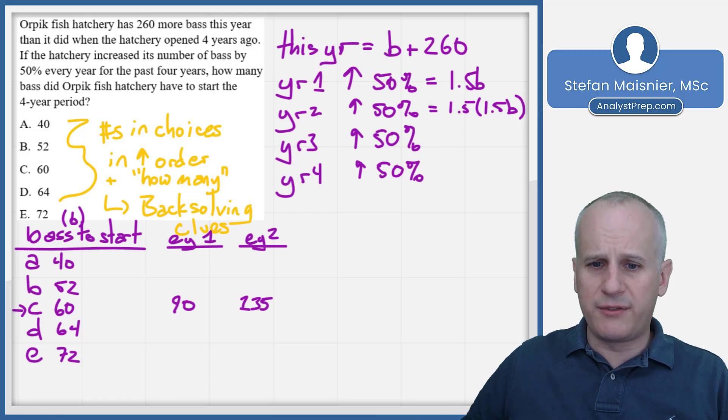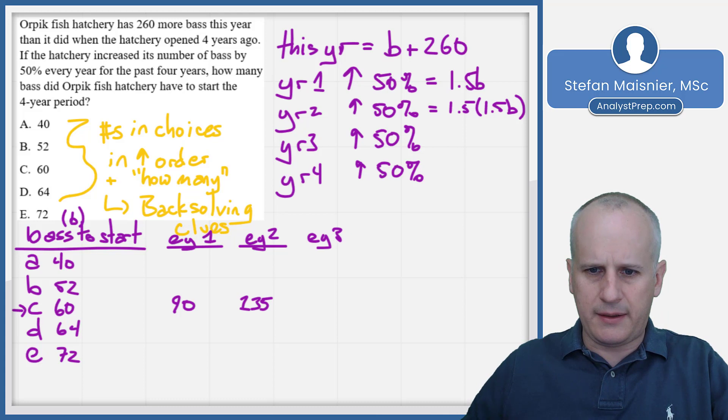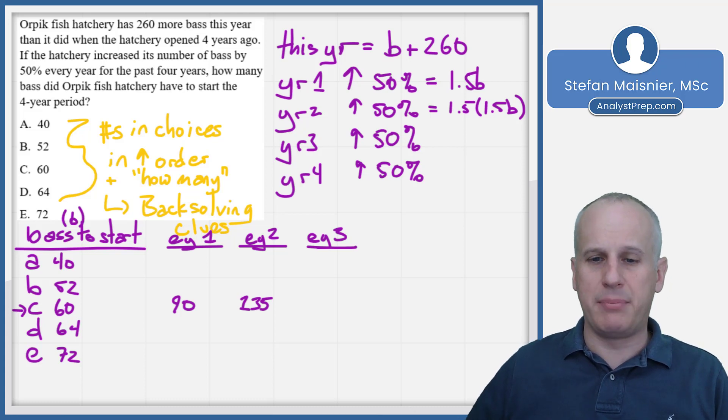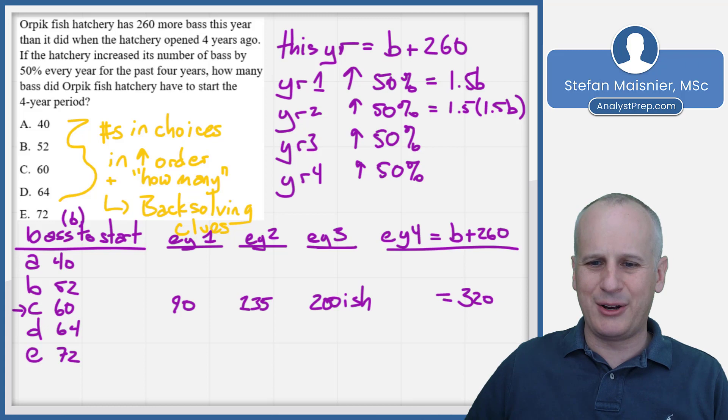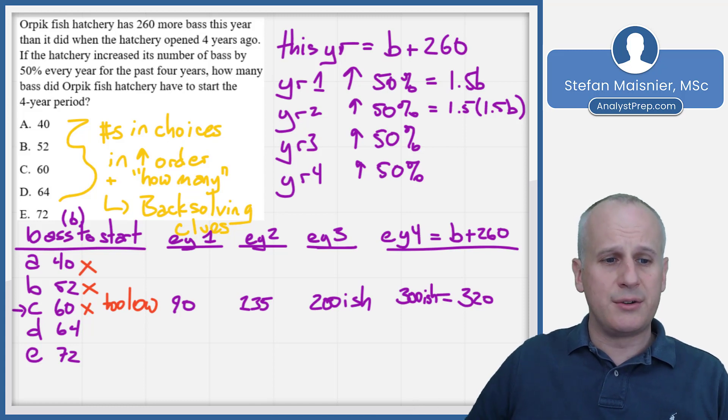So if we had 60 bass to start, our end year one, we'll just say EY1 as a shorthand, would be 90 bass. And my EY2 would be 135 bass because that would be 45, which is half of 90, add that. And then we've got to get my EY3, which at this point I can tell is not going to be an integer because I can't take a half of 135. But I still want to kind of work my way towards this to see whether I'm where I need to be, because my EY4 target should equal b plus 260. And in this case, 135 half of that is, if we did 134 that'd be 67, so it's like 200-ish. And EY4, if we're doing b plus 260, should be equal to 320. And I go, that's going to be like actually 300-ish. So that's too low.